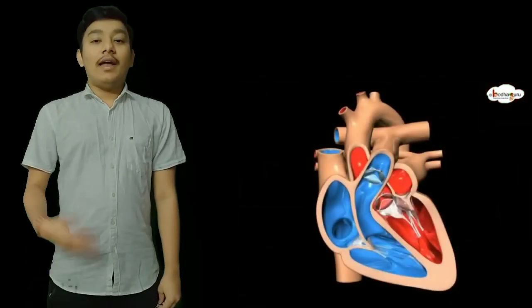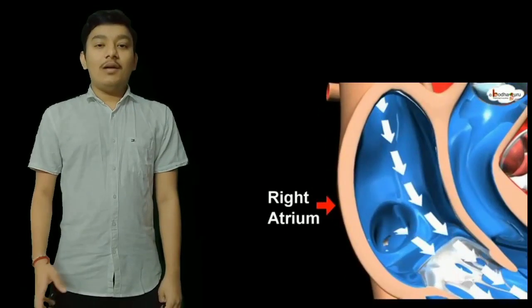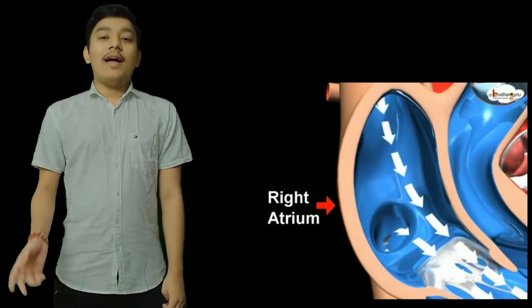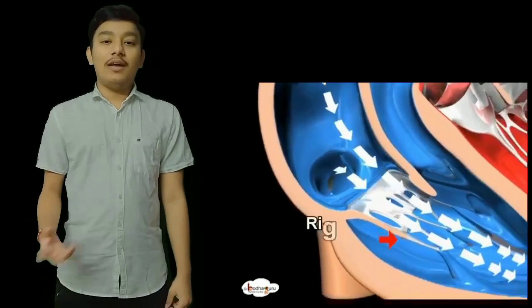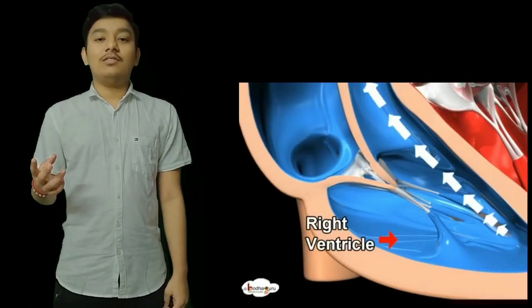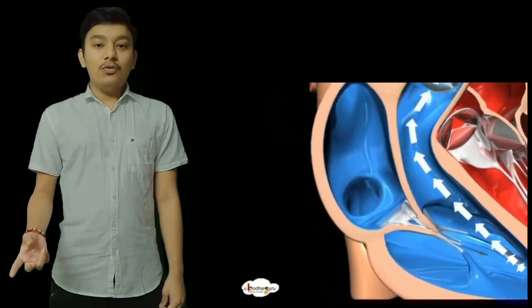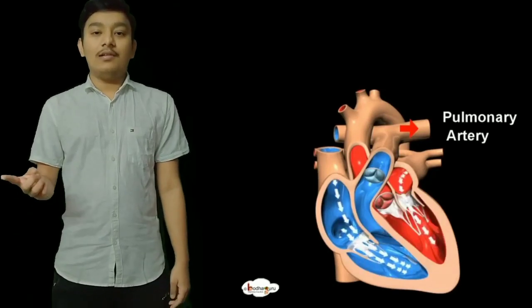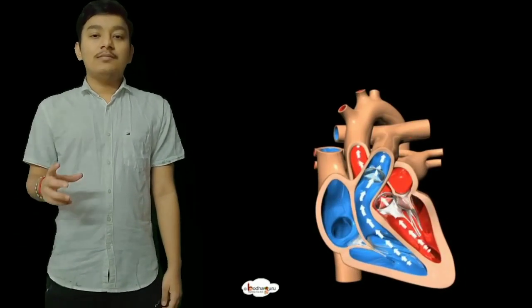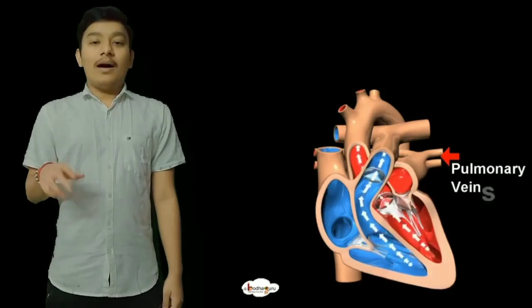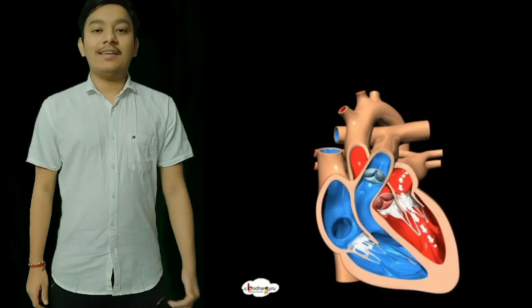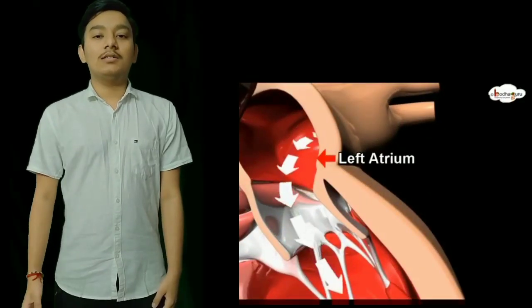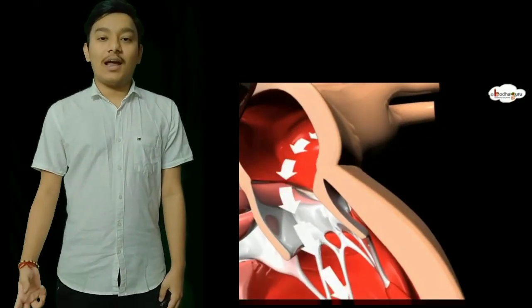The right side of the heart receives deoxygenated blood and sends it to the lungs. The right atrium receives deoxygenated blood via the inferior and superior vena cava, which are the largest veins in the body. When the right atrium fills with blood it contracts and blood passes into the right ventricle. The right ventricle then pumps blood to the lungs via the pulmonary artery, where the blood picks up oxygen and releases carbon dioxide.